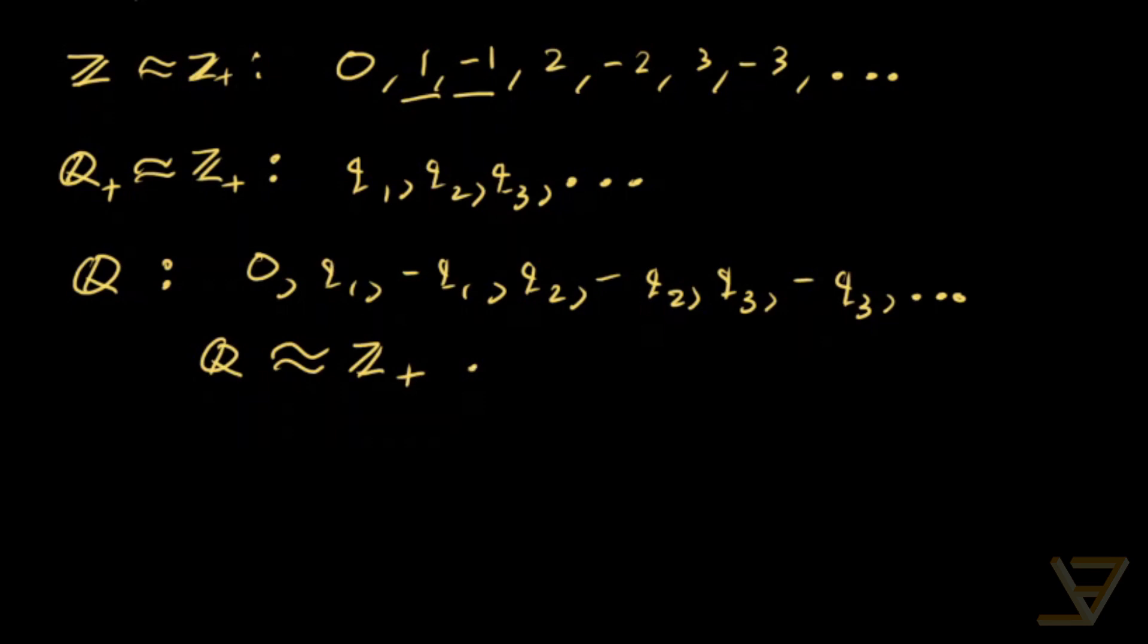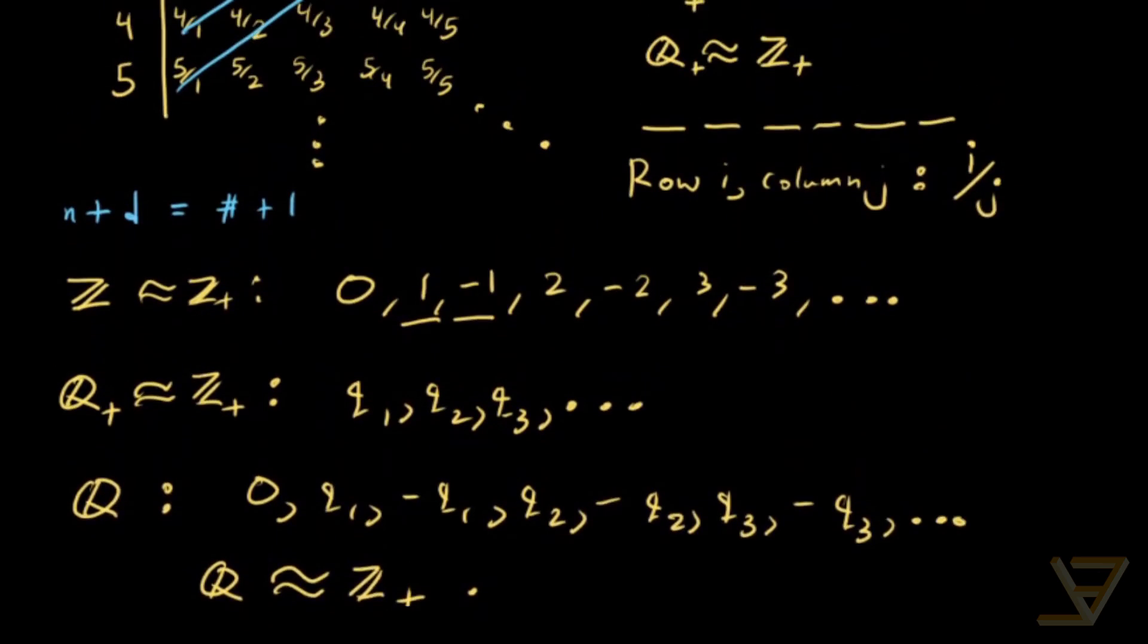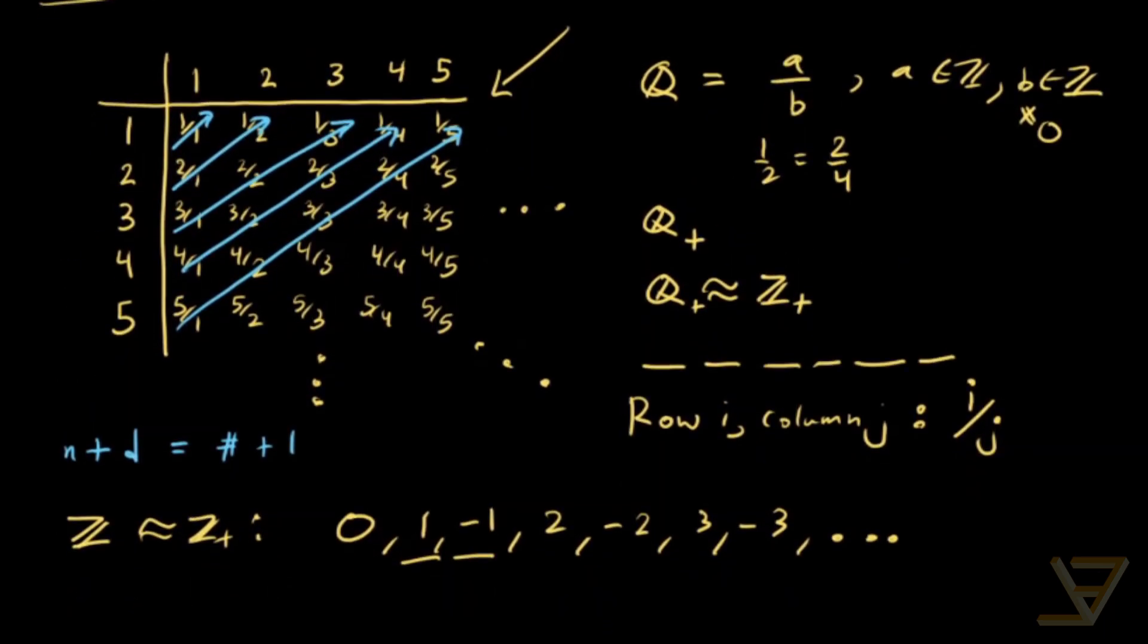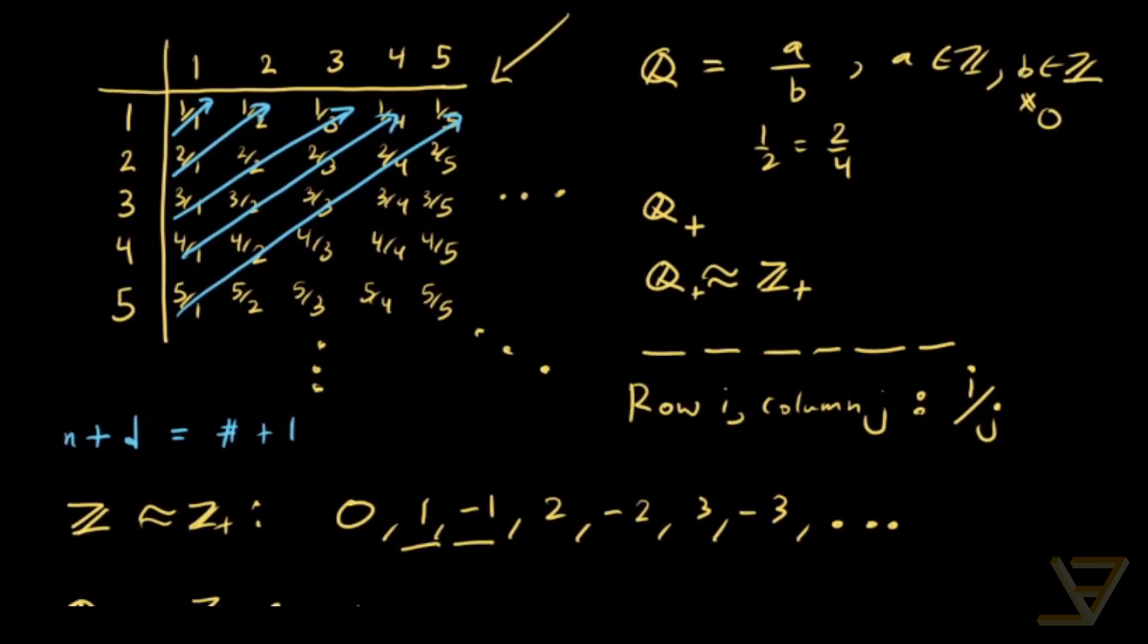And the last thing I want to mention is that the Cantor snake, the reason that this part doesn't matter is that we can always skip over repeats. We're going through a process in the Cantor snake. So if we ever come across a fraction that's already been iterated over previously, except in a different form, we just skip over it. And we still iterate over all the rationals that way.